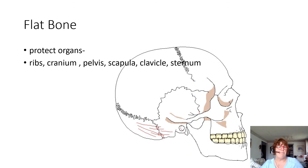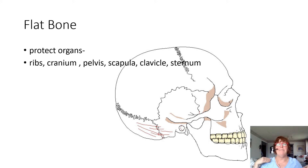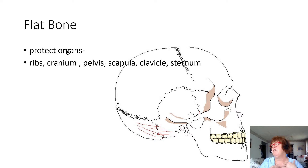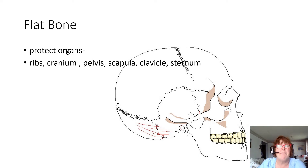We have flat bones and they protect our organs — our ribs, cranium, pelvis, and scapula, which is the back or what we call the shoulder blade. The clavicle is this bone right here. And then the sternum is the bone right here that protects us. Flat bones are really for protecting our organs.